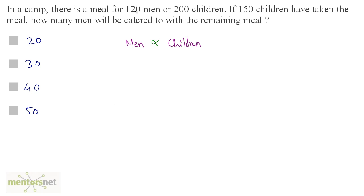So we have 120 men equivalent to 200 children. Now 150 children have taken the meal. If there are 200 children and 150 have taken the meal, the number of children remaining is 50. 200 minus 150 is 50 — so 50 children remaining.